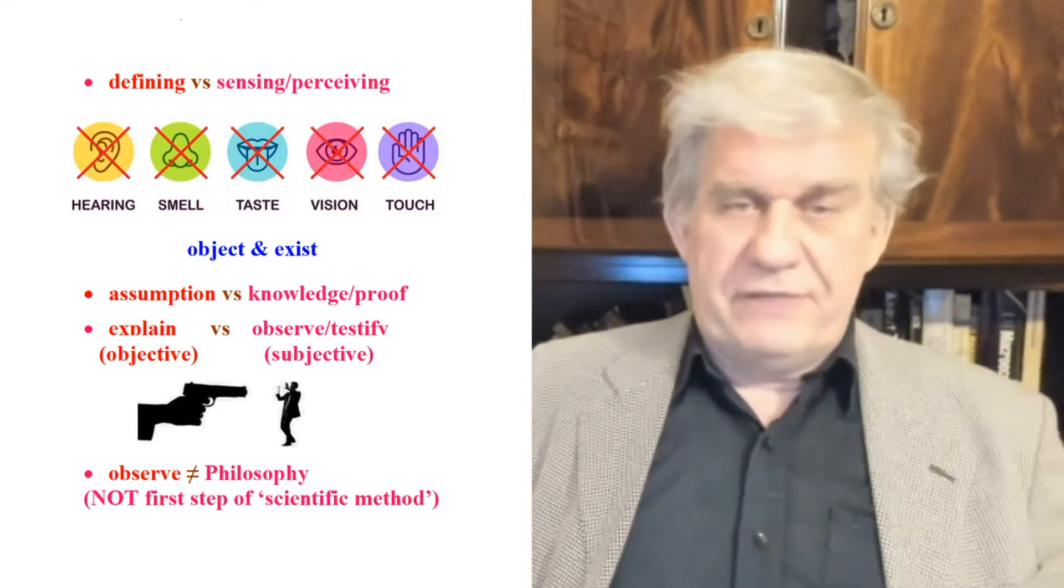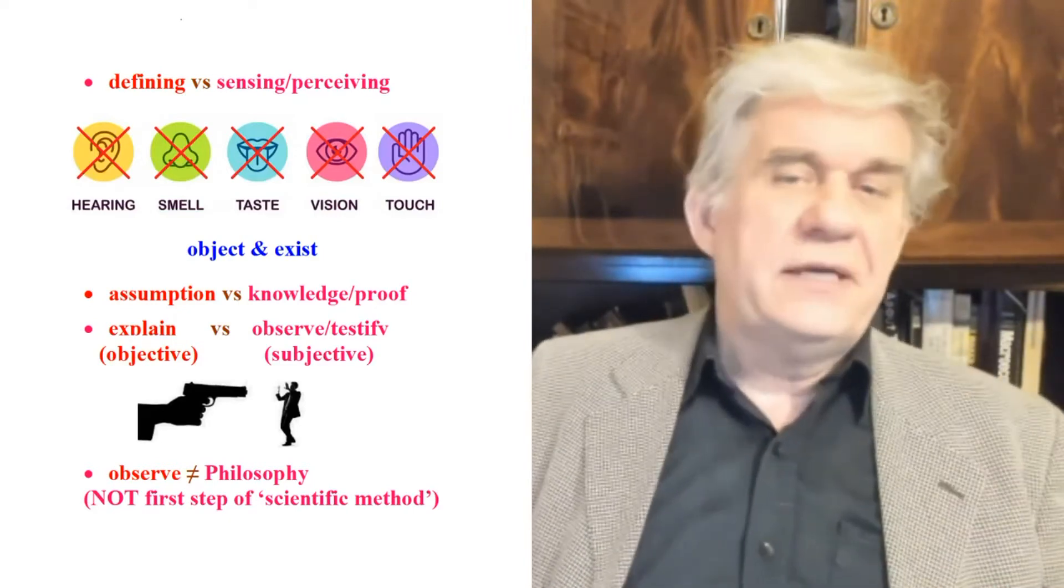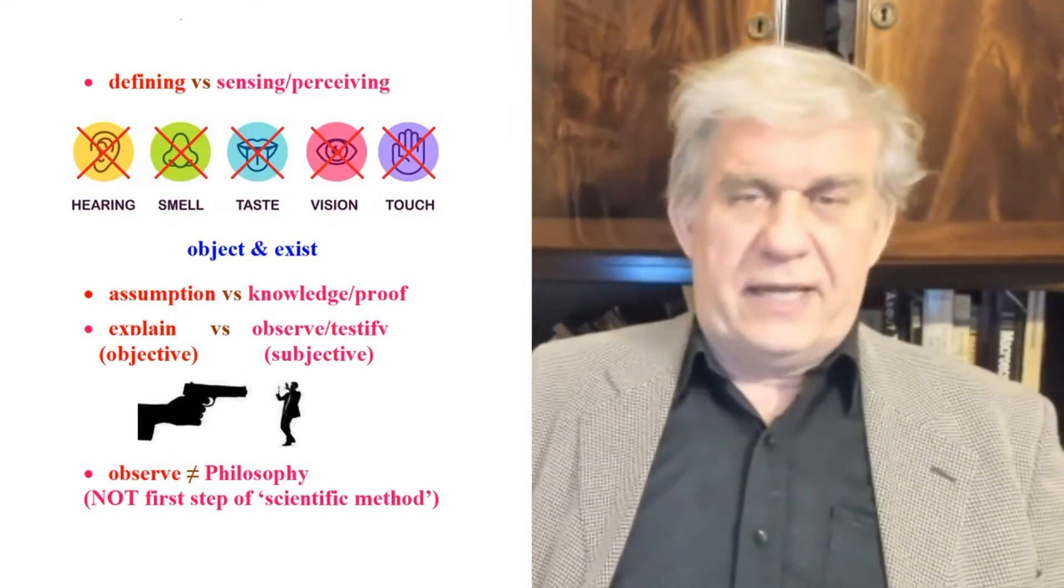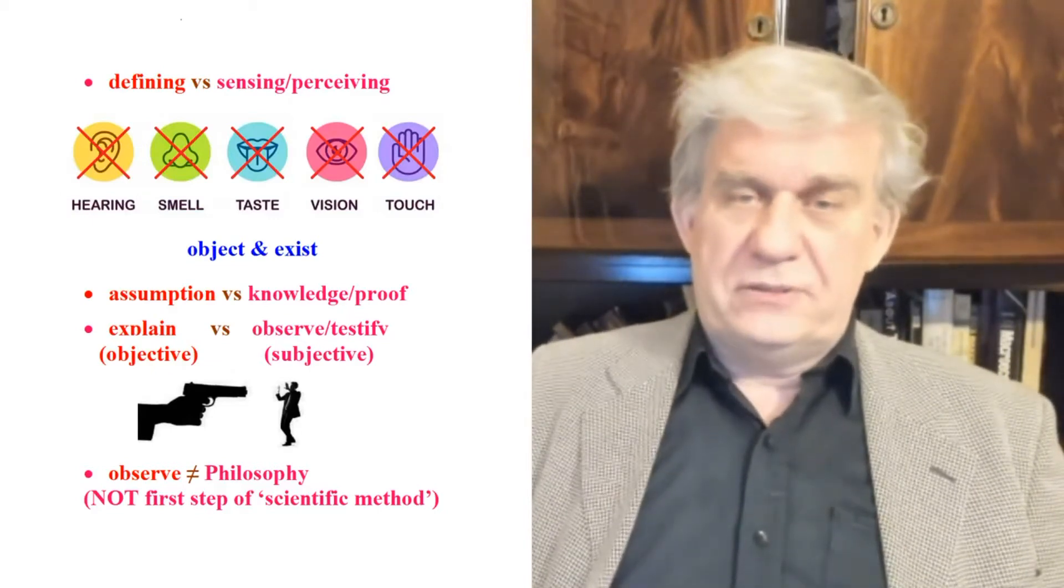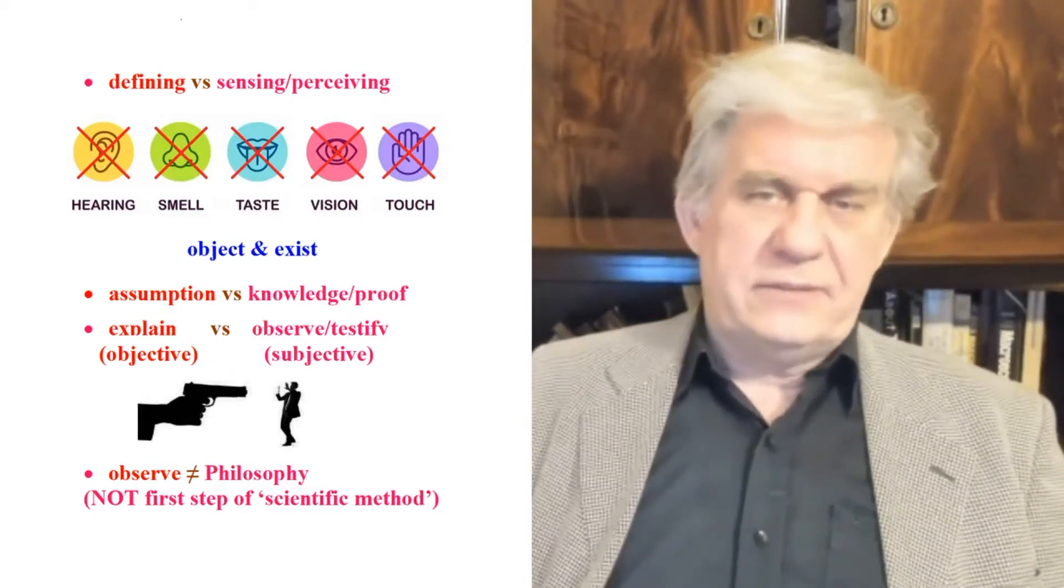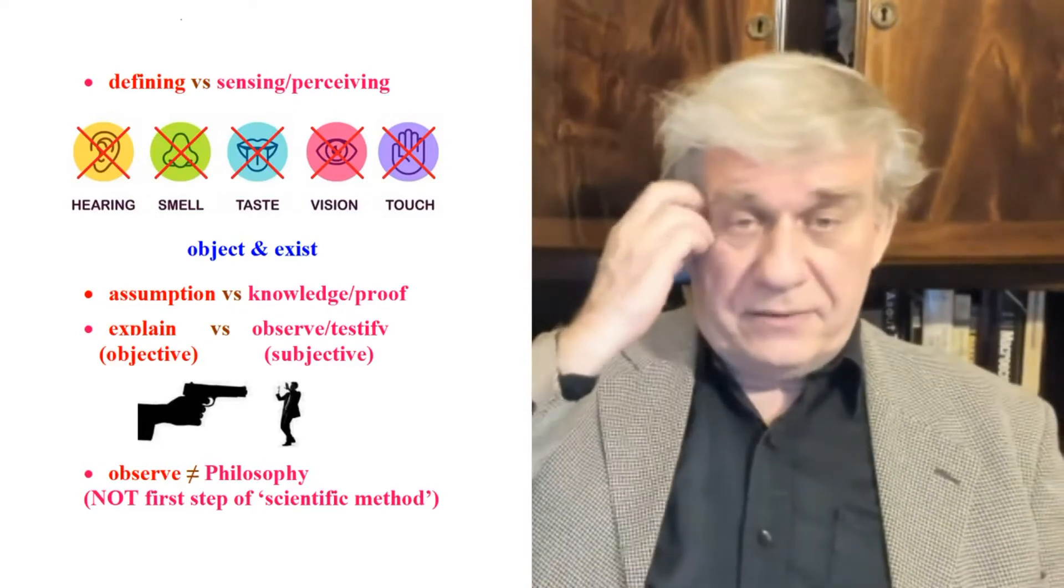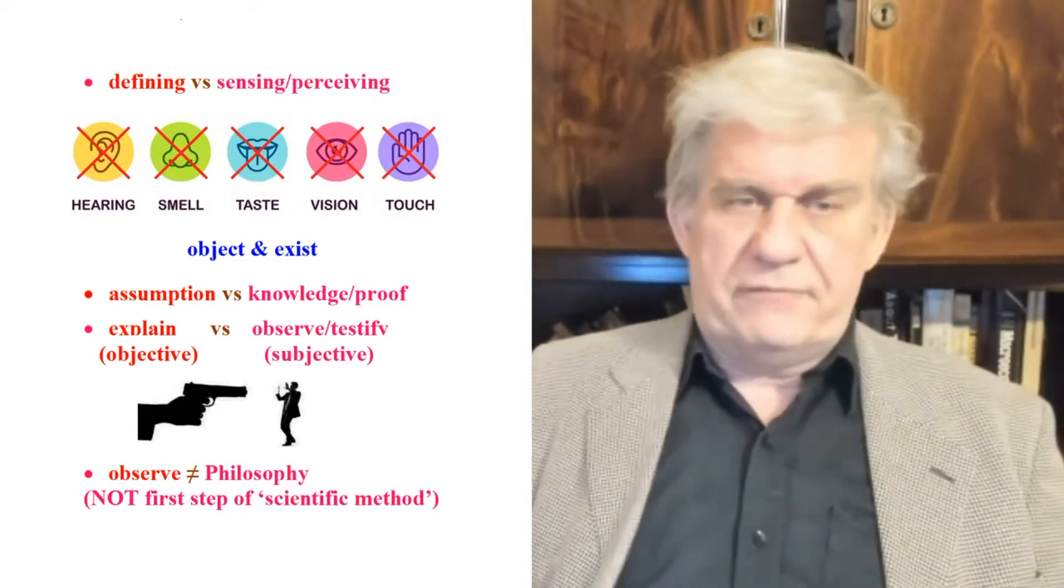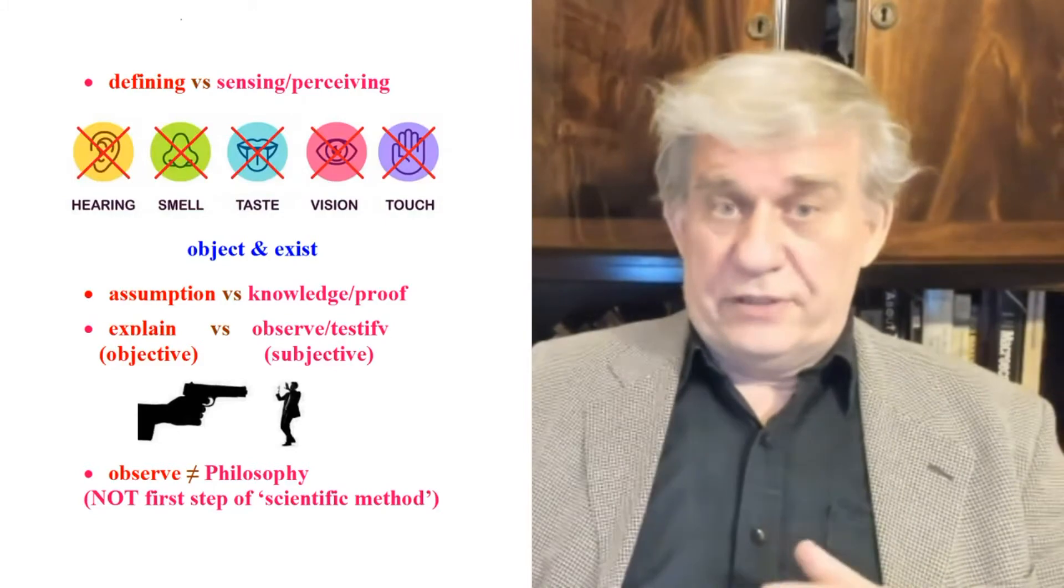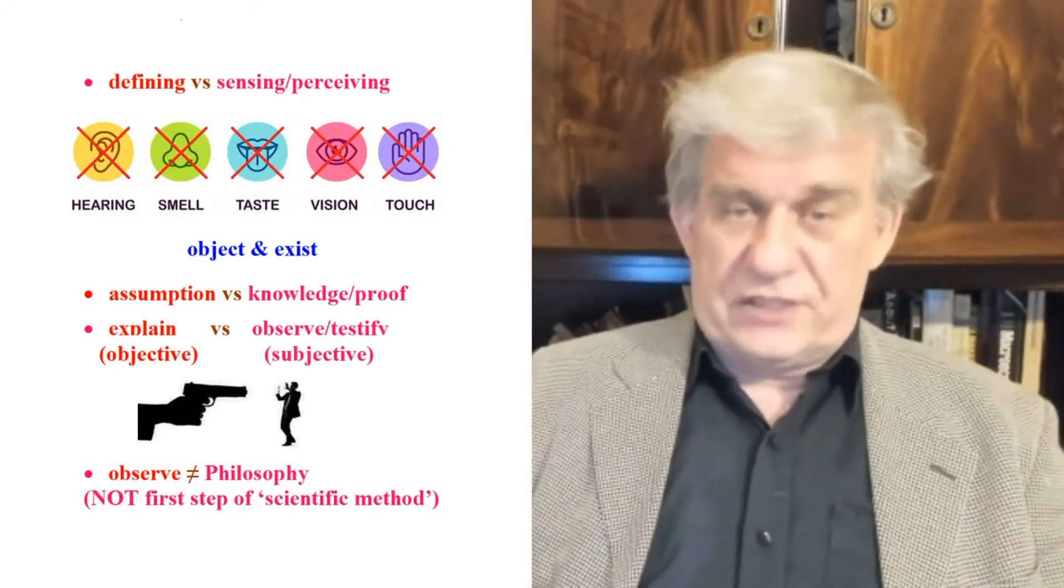And we define an object as that which has shape, and existence as an object that has location. What the word exist adds to a thing, an object, is location. And that's why we get rid of the senses, because that's very subjective, especially when you're defining, when you're creating these words as the foundations for physics, for science.